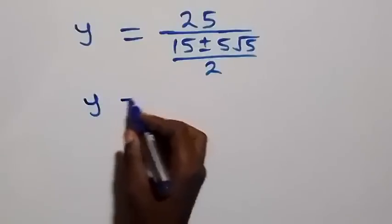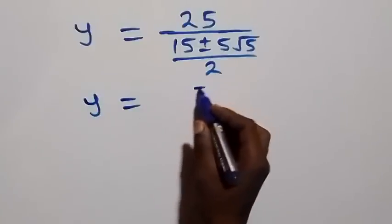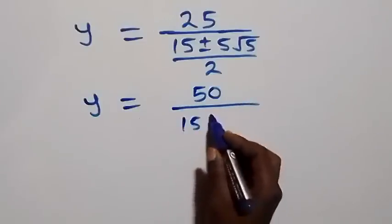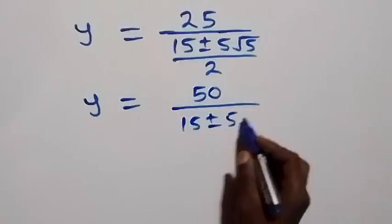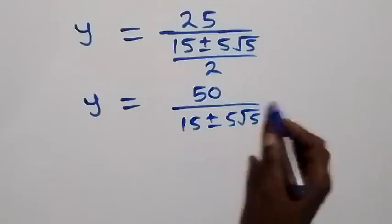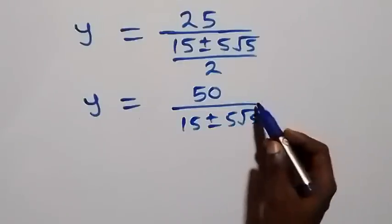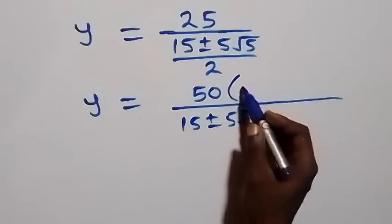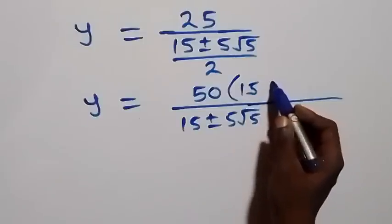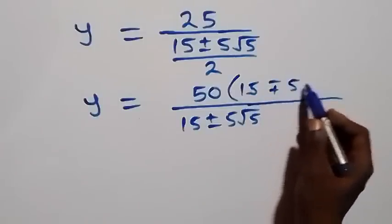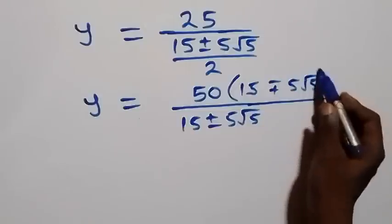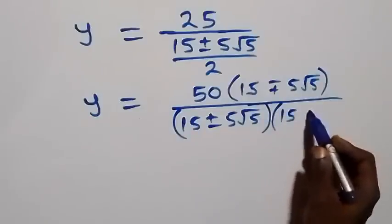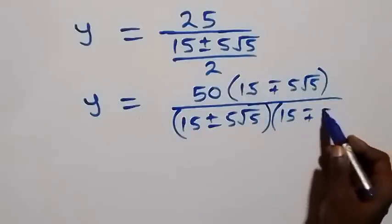We rationalize by multiplying numerator and denominator by the conjugate of the denominator, which is (15 ∓ 5√5). So y = 50(15 ∓ 5√5) / ((15 ± 5√5)(15 ∓ 5√5)).